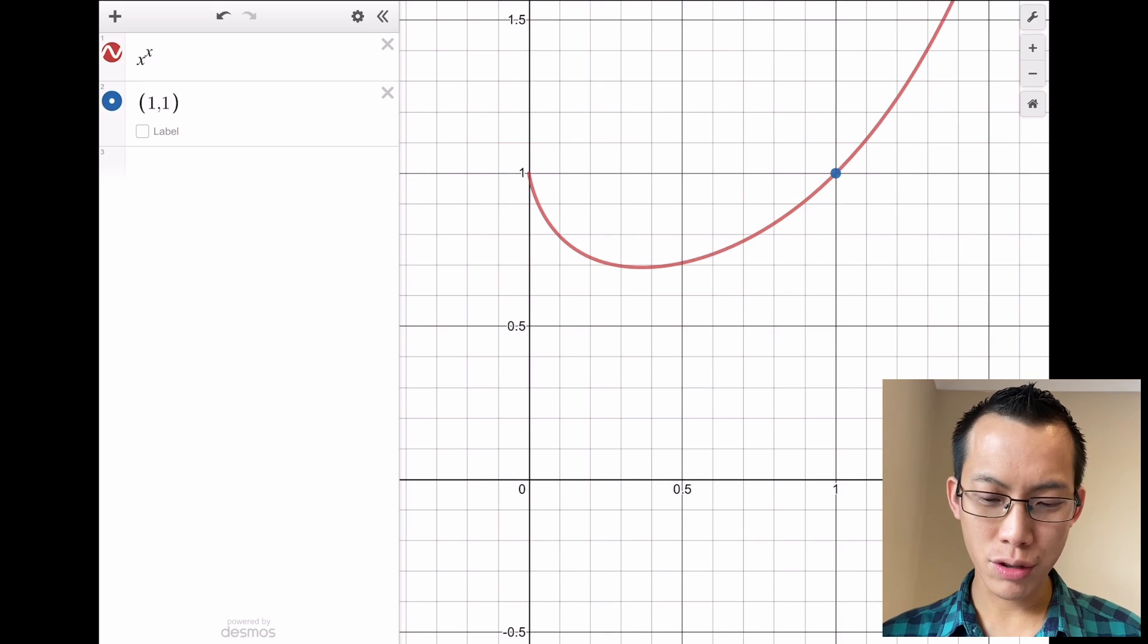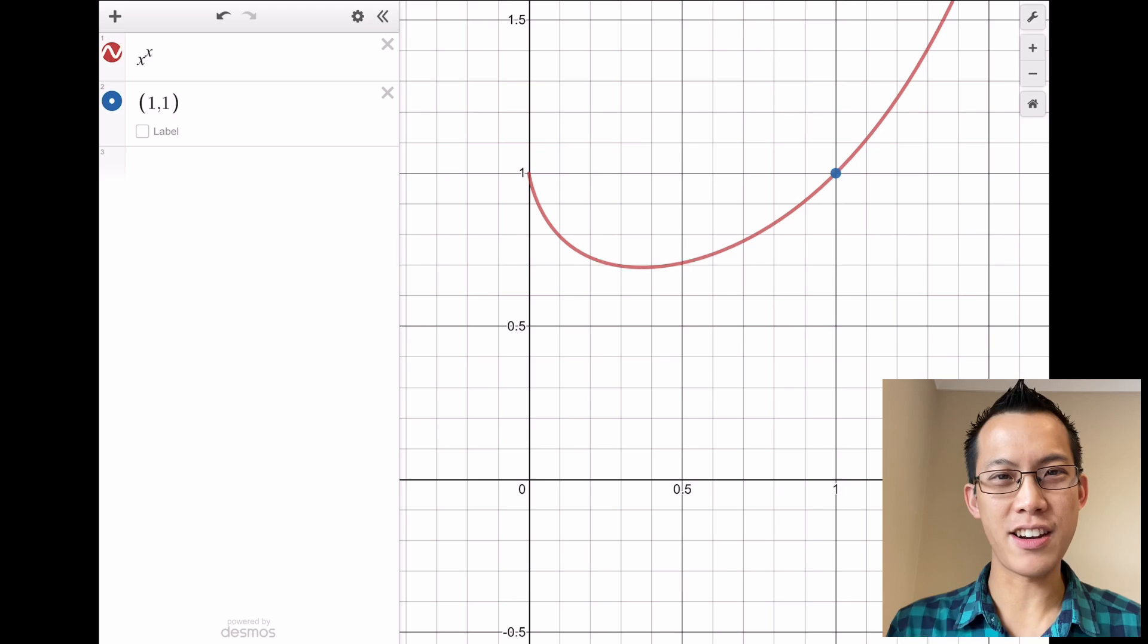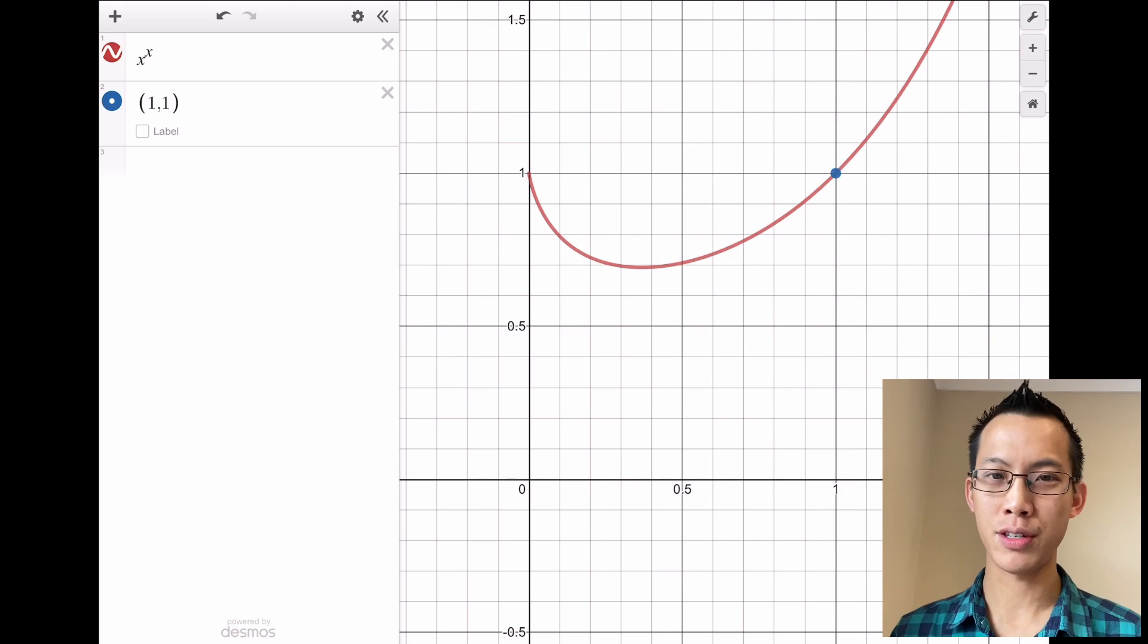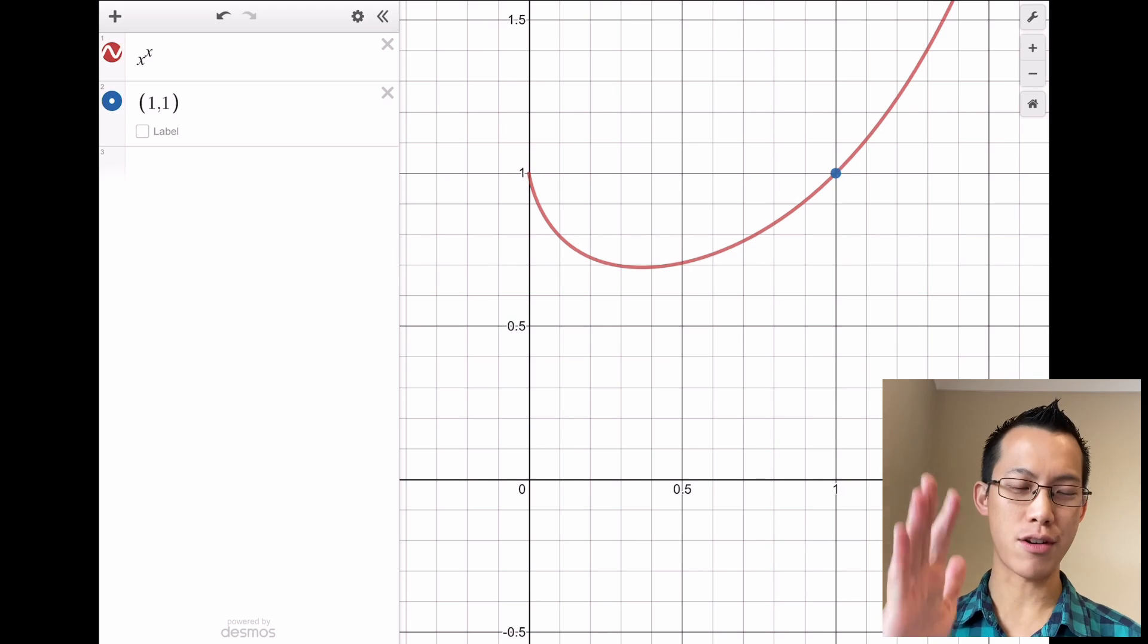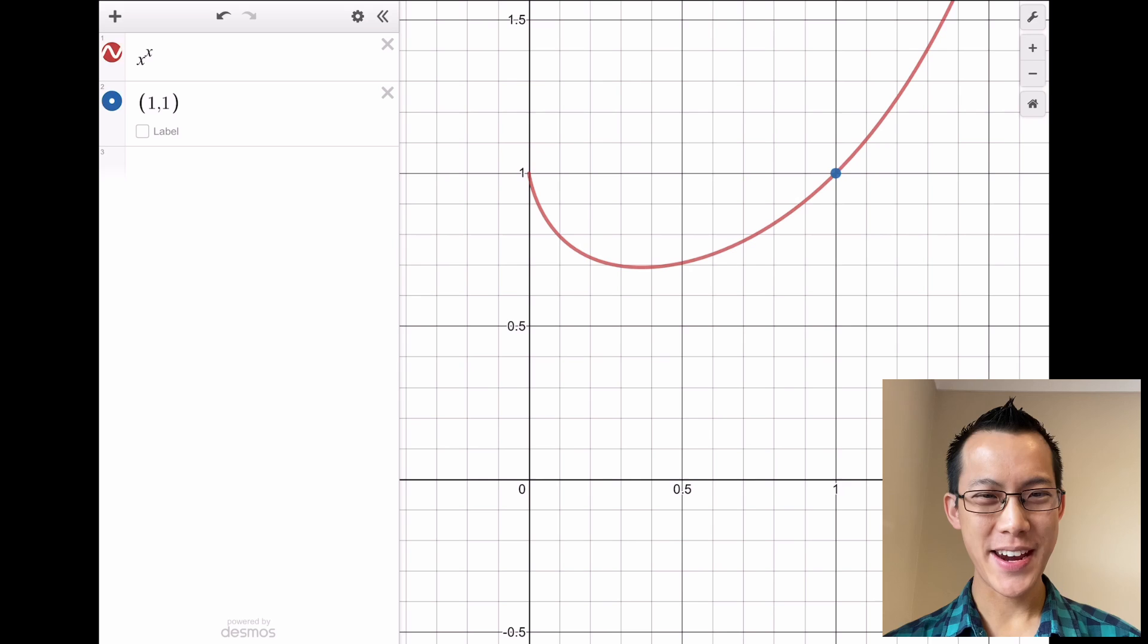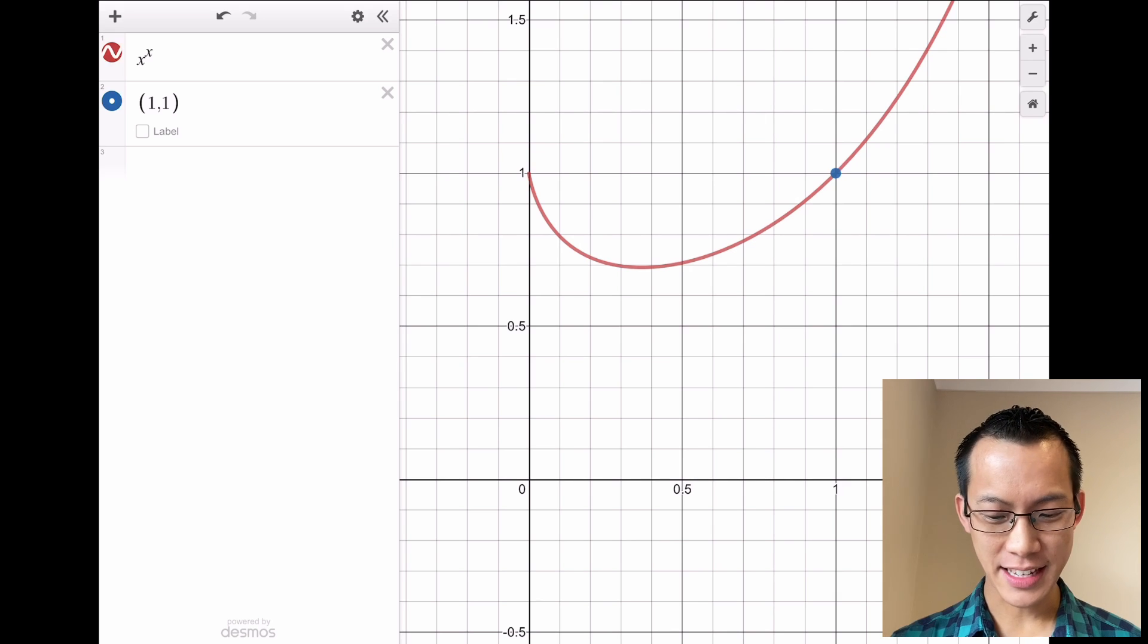You can see as you go toward the right, it's kind of what you expected—it just gets bigger and bigger: 2², 3³, 4⁴, these things are just sort of skyrocketing. But then something weird happens between x = 0 and x = 1. It starts to dip down and then it goes back up—there's this turning point. What's going on here?